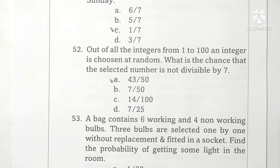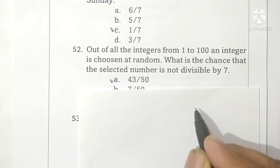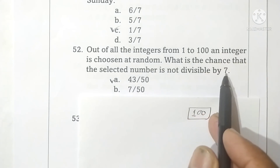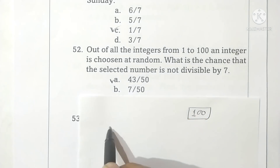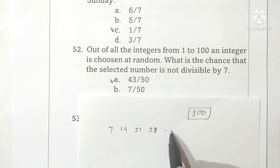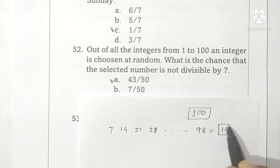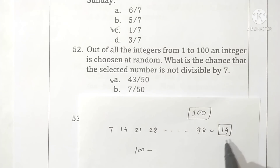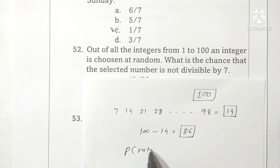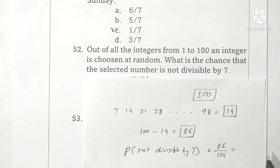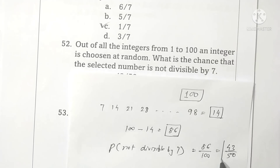Question 52: Out of all integers from 1 to 100, an integer is chosen at random. What is the chance that the selected number is not divisible by 7? Total sample space is 100. Numbers divisible by 7 are 14. Therefore numbers not divisible by 7 are 100 minus 14 equals 86. Probability of not divisible by 7 is 86 upon 100, giving a final answer of 43 upon 50. Option A is correct.